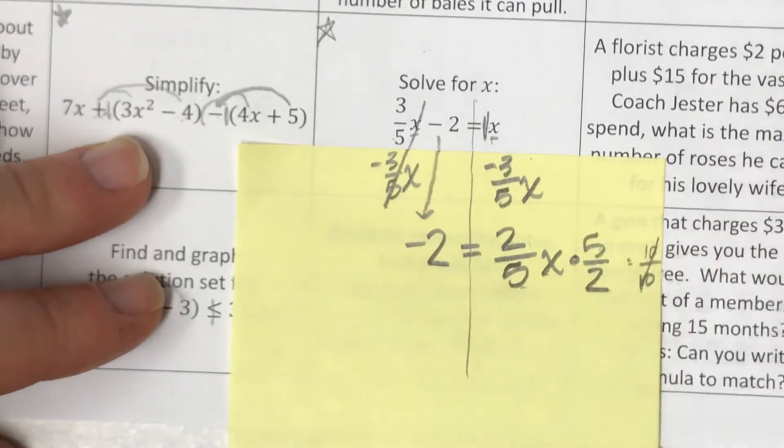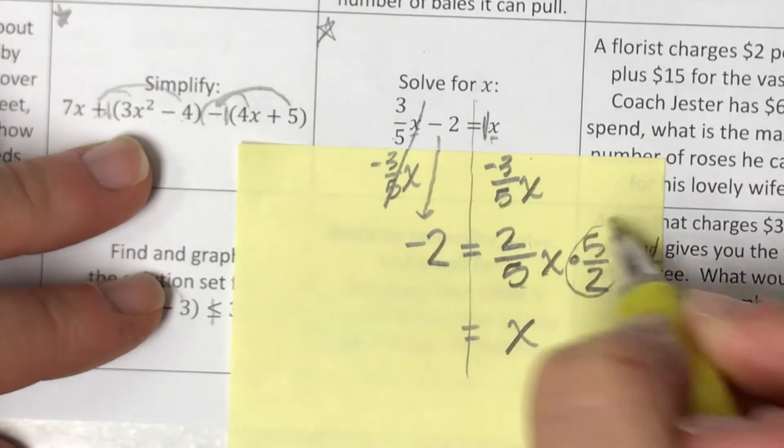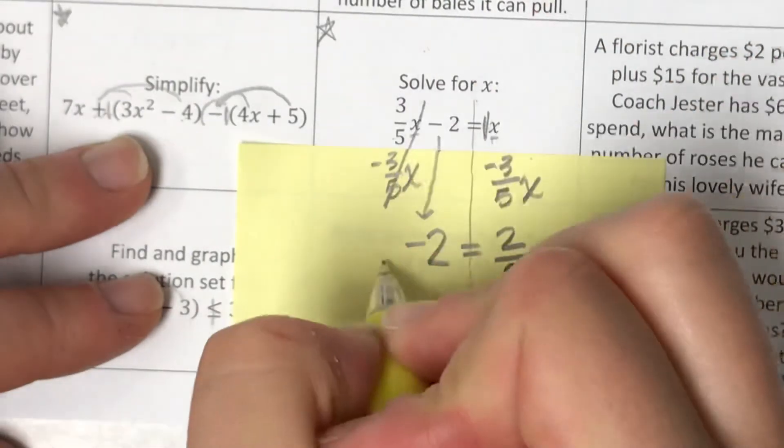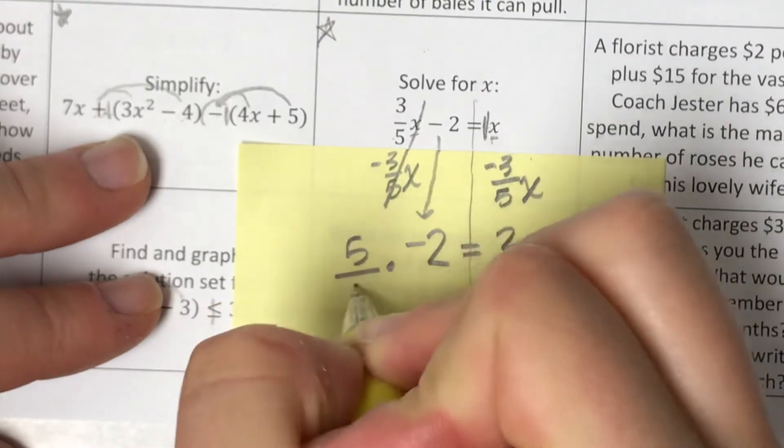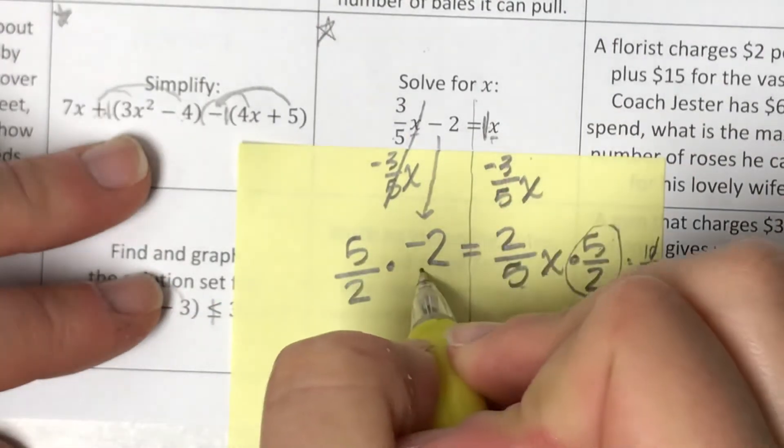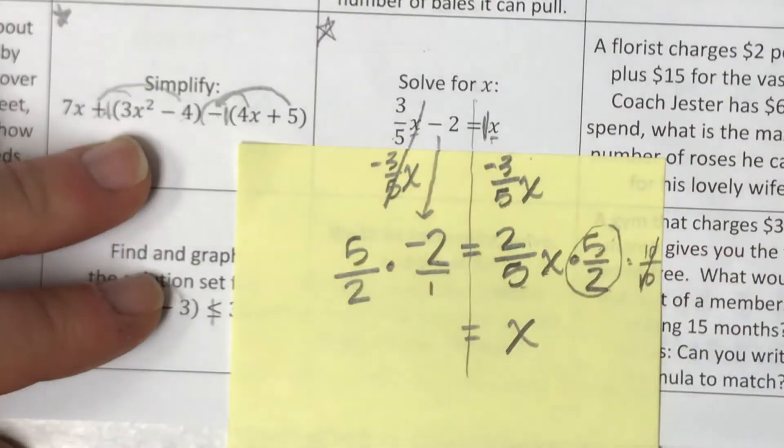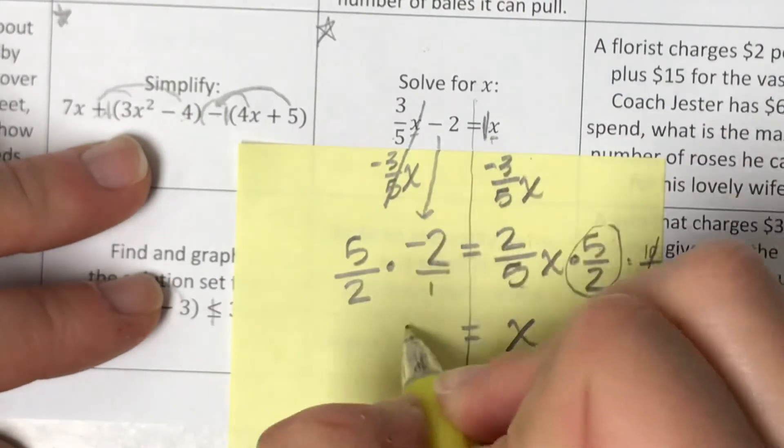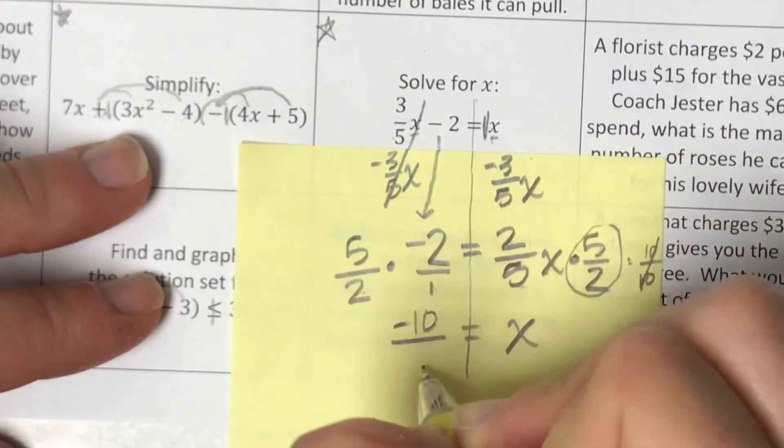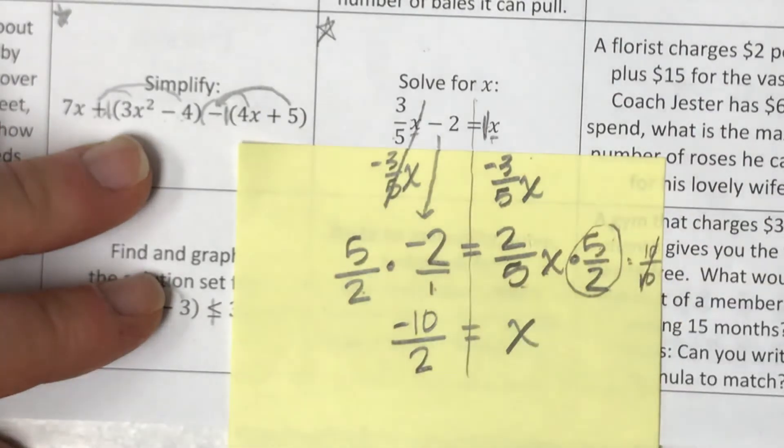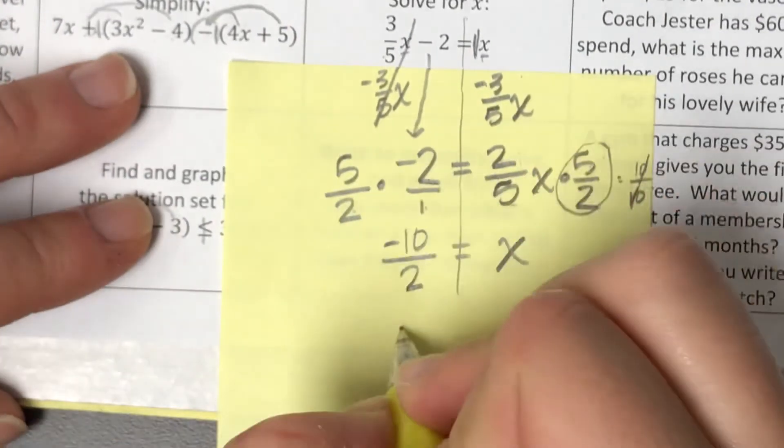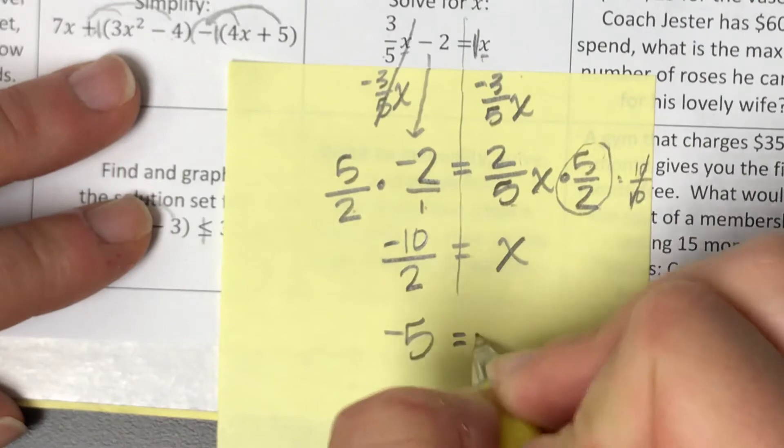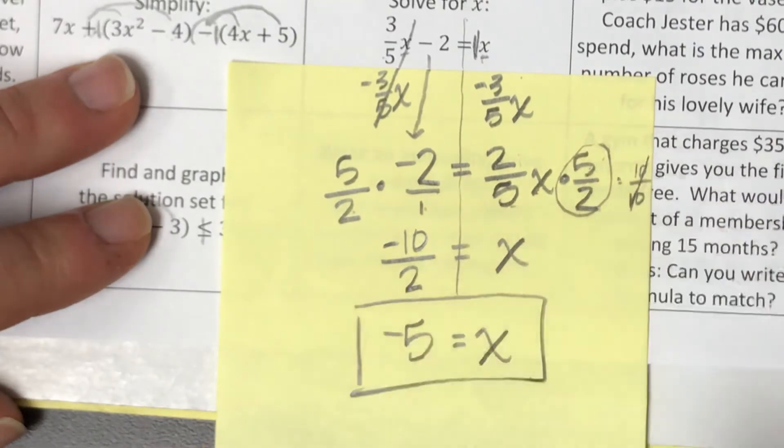But if I multiply this side times 5 halves, I also have to multiply this side times 5 halves. So I'm going to go ahead and make this 2 over 1. Let's see. That makes negative 10 over 2 times 1 is 2, which I can simplify to negative 5.